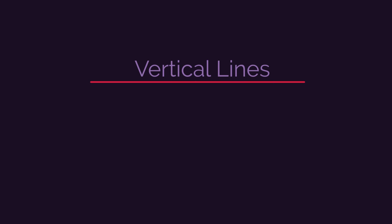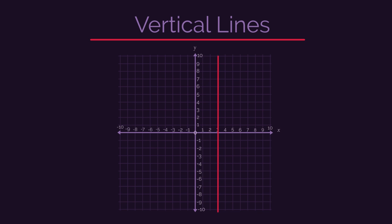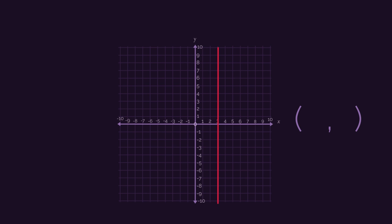So let's start with vertical lines. Have a look at this line here. All of the points on this line have an x-coordinate of 3. So we can say that the equation of this line is x equals 3.